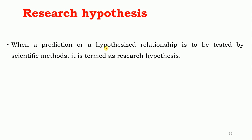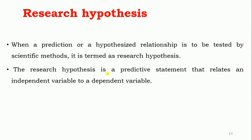Research hypothesis means: when a prediction or a hypothesized relationship is to be tested by scientific method, it is termed as a research hypothesis. A hypothesis is a statement supported by theory and literature review — we predict what will happen at the end of our research. If you test this hypothesis using a scientific method, it is called a research hypothesis. The research hypothesis is a predictive statement that relates an independent variable and a dependent variable.